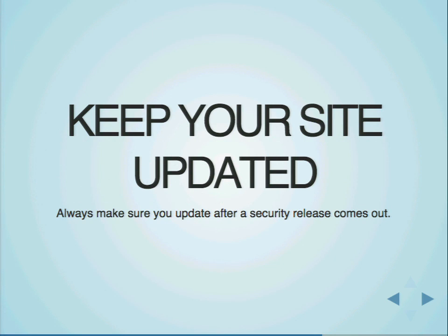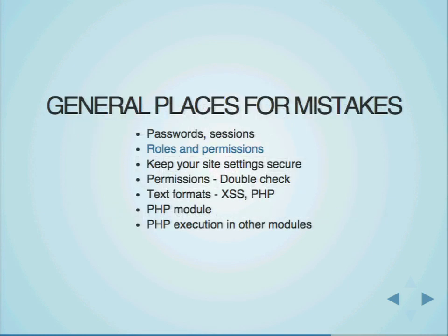The number one easiest thing you can do to keep your site secure is keep your site updated. That's the easiest step you can take — just keep your site updated. We typically release security advisories and code on Wednesdays. You'll get emails on Wednesdays about them, or tweets if that's how you're following. From a site builder perspective, the most common places people make mistakes include insecure passwords — weak passwords, reusing passwords across multiple sites — that's one of the most common ways sites actually get hacked. Also sessions: if your site is not over HTTPS and you're using it on unsecured Wi-Fi, sniffing sessions is a problem.